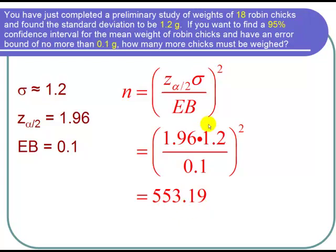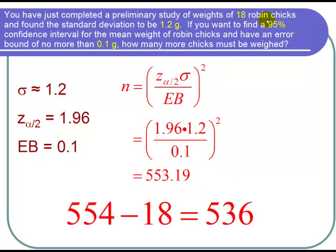Now we're not quite done yet with the problem because we've already weighed 18 chicks. So to find out how many more we need to weigh, we subtract the 18 already weighed from the 554 that need to be weighed, and I got 536.